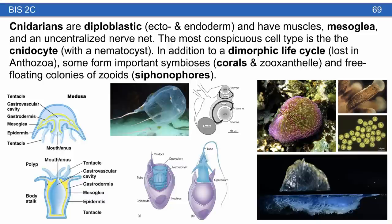Cnidarians are diploblastic — they have two tissue layers, ectoderm and endoderm. They also have muscles, a non-living jelly-like material called mesoglia, and an uncentralized nerve net. The most conspicuous cell type is the cnidocyte, famous as the stinging cell that stings using a nematocyst. The nidocyte has a nidocyl trigger and a nematocyst that everts to penetrate whatever the cnidarian is stinging. Many species have a dimorphic life cycle.